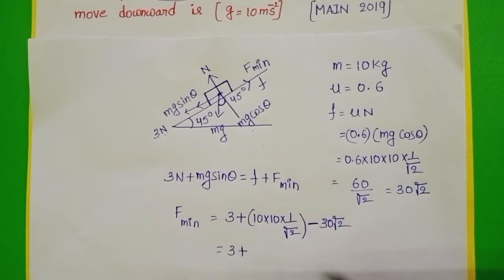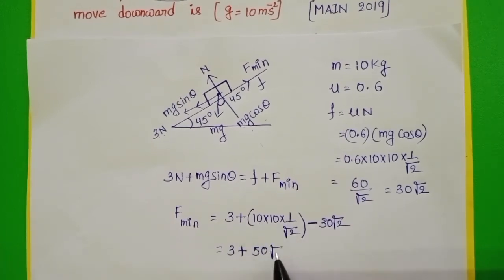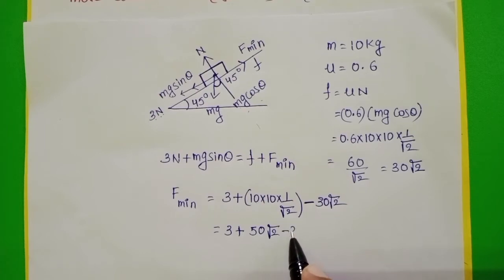3 plus 100 by root 2, 50 root 2, minus 30 root 2.